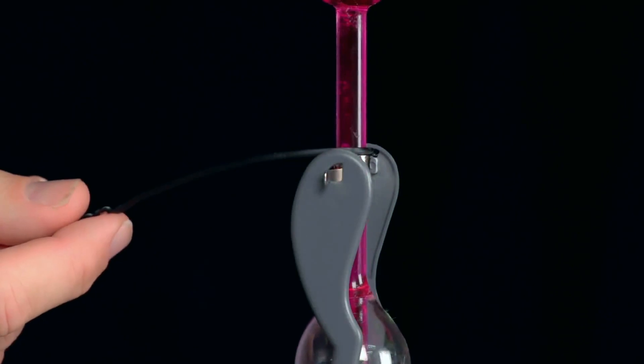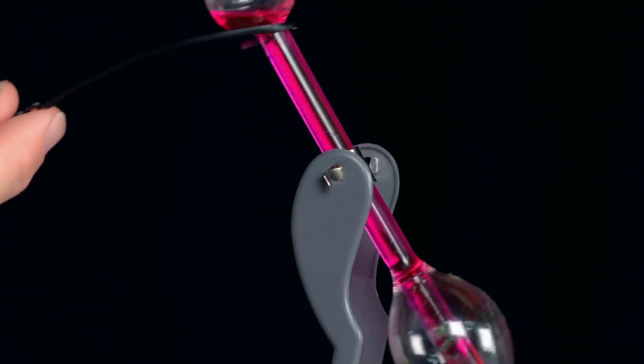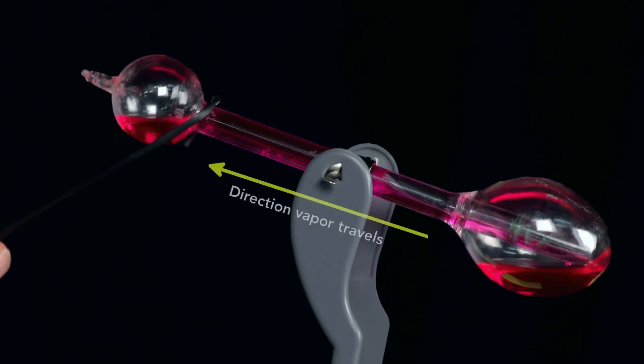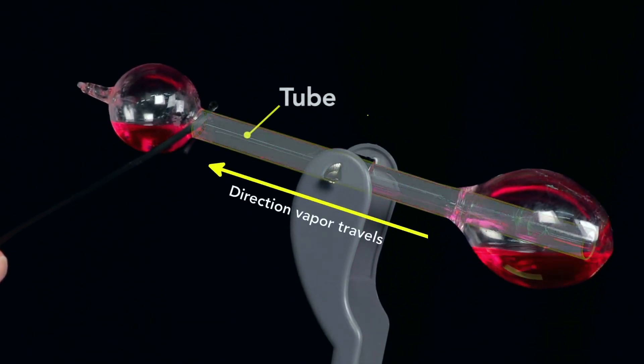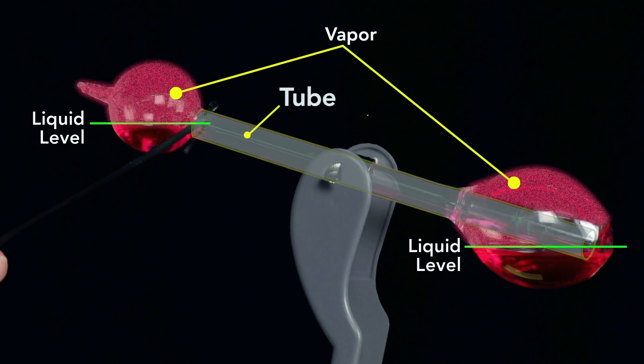To see the pressure equalize, I'll slow down the bird as I tilt it forward. Right now the head is half full. When I tilt it, you see a slug of vapor go from bottom to top. I've tilted it far enough forward that the liquid in the head is below the top of the tube, and the liquid in the base is below the section of the tube that almost reaches the bottom of the bird.